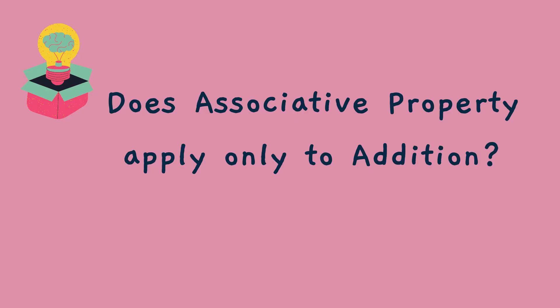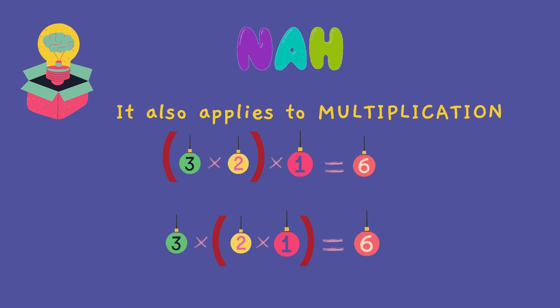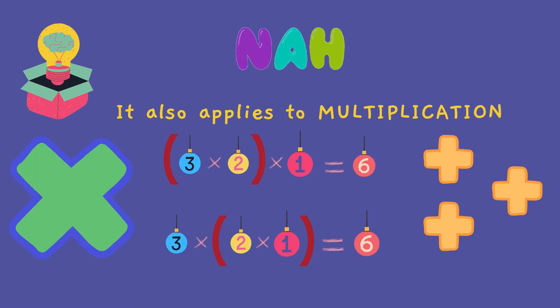Wait! Does associative property apply only to addition? Nah! It also applies to multiplication. Three times two is six, and six times one is six. Or two times one is two, and three times two is six again. Why do addition properties apply to multiplication? Because multiplication is repeated addition!